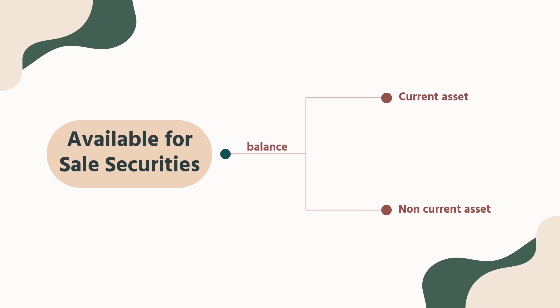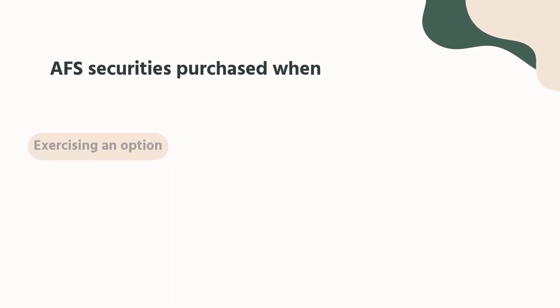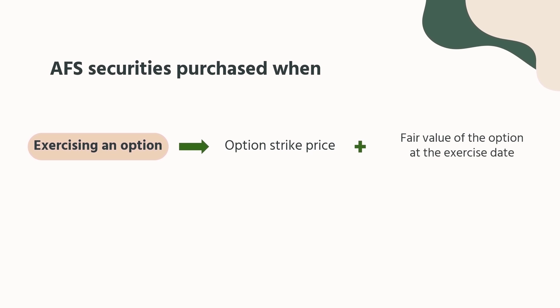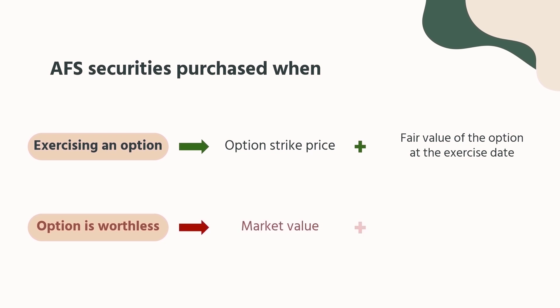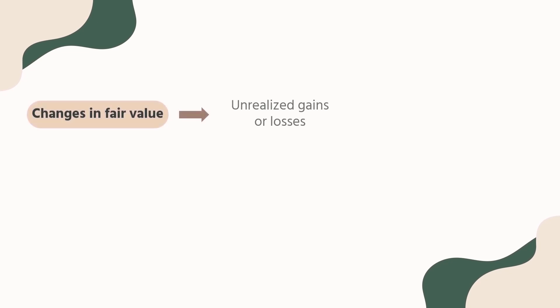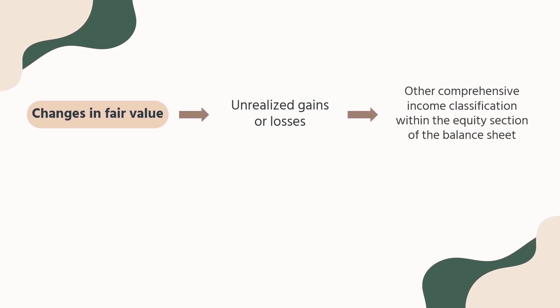Available for sale securities are presented in the balance sheet as either current assets or non-current assets at fair value. They are often listed as non-current assets; however, if the intent is to hold for less than one year, they are current assets. AFS securities purchased when exercising an option are recorded at the option strike price plus the fair value of the option at the exercise date. Companies report AFS securities at fair value. Changes in fair value are recorded in an account titled unrealized gains or losses. The unrealized gains or losses derived from AFS securities are reflected in the other comprehensive income classification within the equity section of the balance sheet. If they are sold, unrealized gains or losses become realized and are included in the income statement.